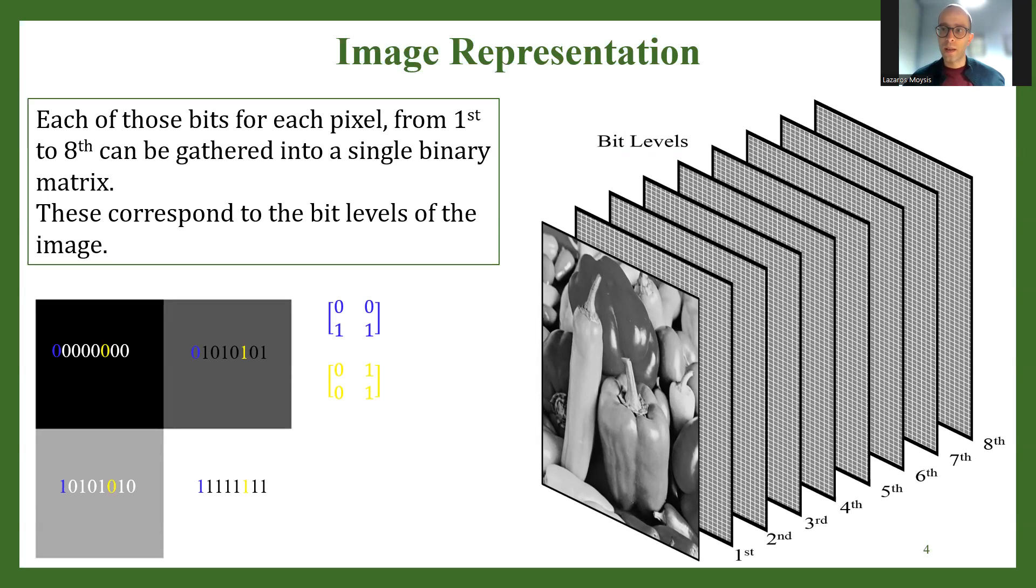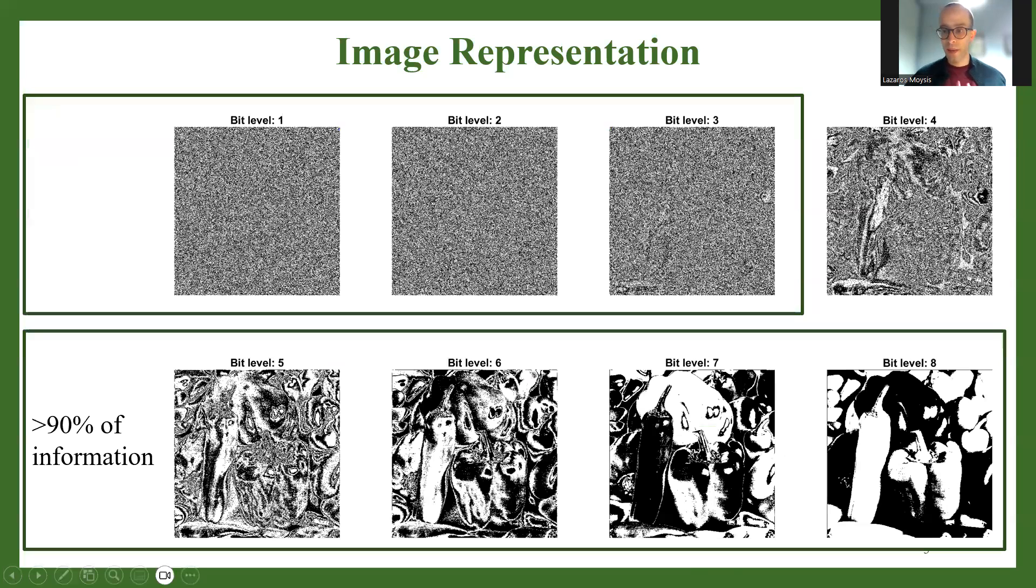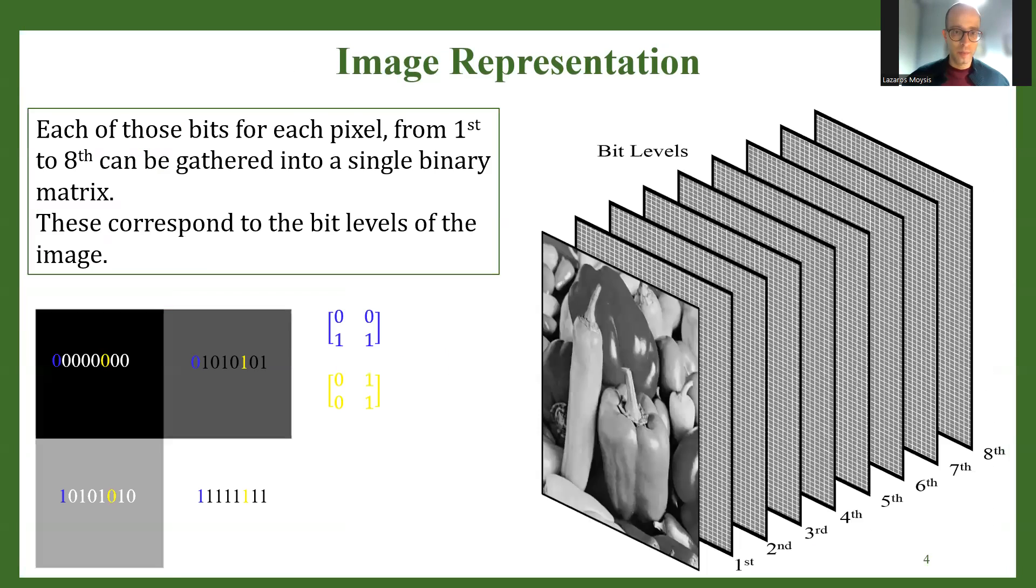But there is a very nice aspect here. How do these planes or these images look like? Let's see an example. They look like that. I have the eight different levels and this looks very interesting. I'm using the peppers image right here. Why is this very interesting? Because not all of these levels include the same amount of information. This is very important.